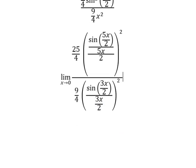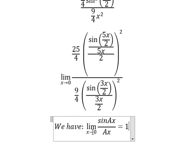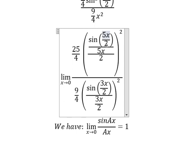Now we have the limit formula. When x approaches 0, sin(θ)/θ equals 1. So here we have 5 over 2 and 5 over 2 for one part, and 3 over 2 and 3 over 2 for the other — these correspond to the argument θ. When x approaches 0, these expressions each equal 1, and we can simplify accordingly.